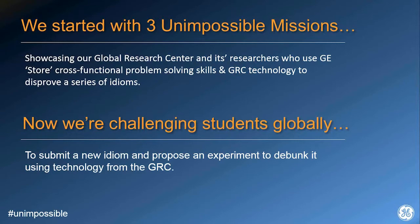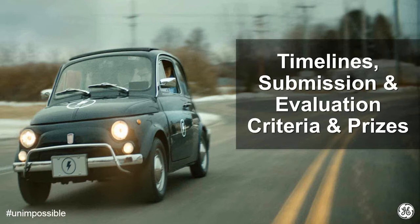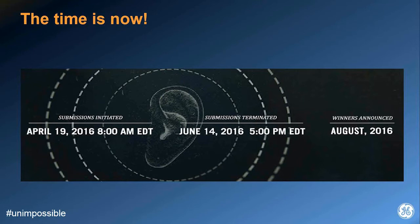Now we'll go through specifics such as the timeline, submission criteria, evaluation criteria, and prizes. Paul from Nine Sigma will start with the timeline. We've been running this challenge since about mid-April and have received a bunch of great responses already. The submission period will remain open through June 14th at 5 p.m. Eastern Daylight Time. Make sure that before then you've either submitted your first response or gone back to edit it. We're expecting to announce winners sometime in August of this year.